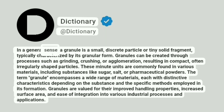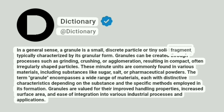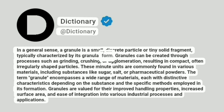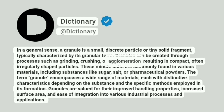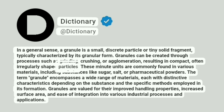In a general sense, a granule is a small, discrete particle or tiny solid fragment, typically characterized by its granular form. Granules can be created through processes such as grinding, crushing, or agglomeration, resulting in compact, often irregularly shaped particles.